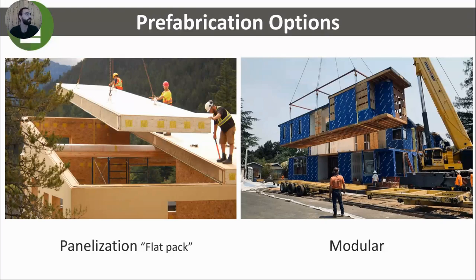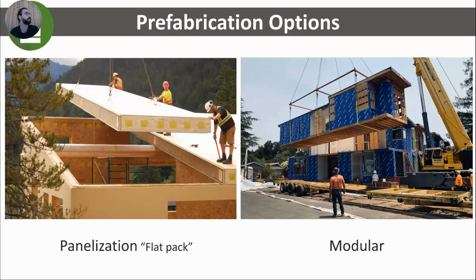Flat pack is a bit more flexible for design options — you can build essentially any shape with a panelized system. It's also way more efficient for shipping, as you can stack panels on top of each other on a trailer bed with very little wasted space. Modular prefabrication is well-suited for boxier, more repetitive designs. It offers turnkey solutions — when housing is needed quickly, you can pre-finish those modules more than with a panel system. The downside is that shipping is less efficient since you can usually only ship one or two modules per trailer, which contains a lot of empty space. On-site lifting is also more complex, requiring larger cranes.